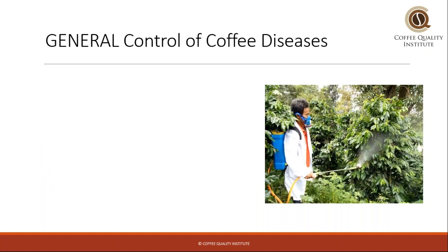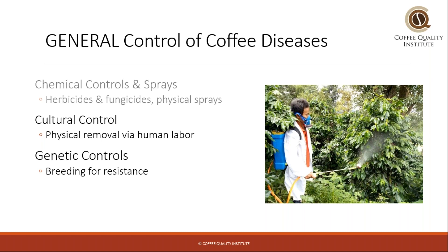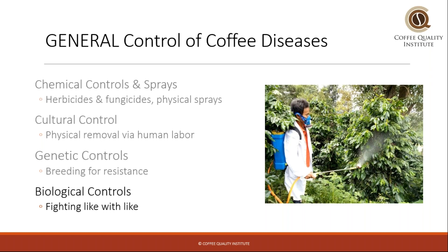To conclude, here's a note about control of these diseases. There are a few general methods: chemical control, including the fungicides we discussed; cultural control — things humans do physically, like removing and burning infected stems or changing plantation density to improve airflow; genetic control, which is breeding for resistant lines; and biological controls, which is fighting like with like. An example of biological control would be finding a different coffee fungus present in coffee environments that would outcompete the pathogenic fungus.